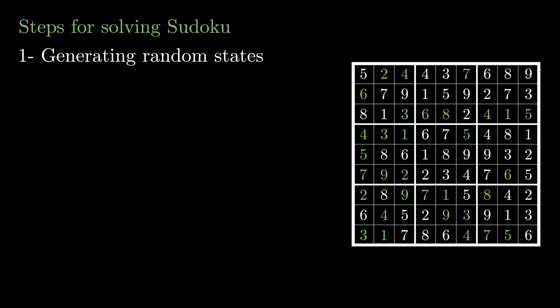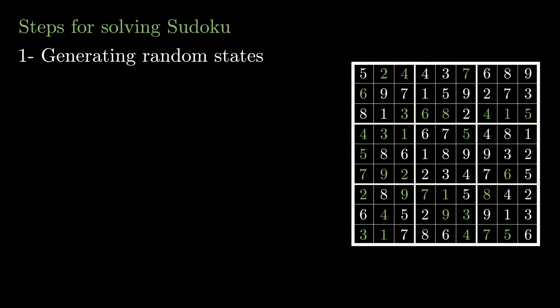And when it comes to generating a new state, I will first choose a random three by three square. And within this three by three square, I will choose two random values that are not fixed and flip them. And this will give us a new state of the Sudoku.